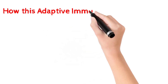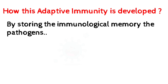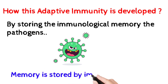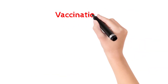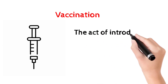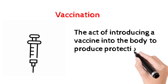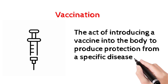How is adaptive immunity developed in our body? We are storing the immunological memory of the pathogens. If there is a particular pathogen in our body, we store it in our immune memory. In adaptive immunity, we have a term called vaccination. Vaccination involves a pathogen — it may be a live attenuated pathogen in small quantities — to develop the immune system in our body.